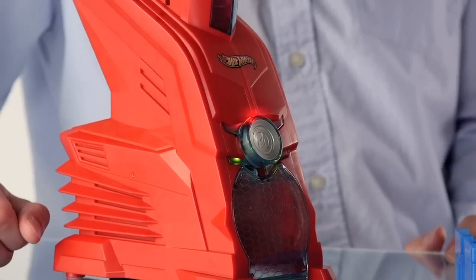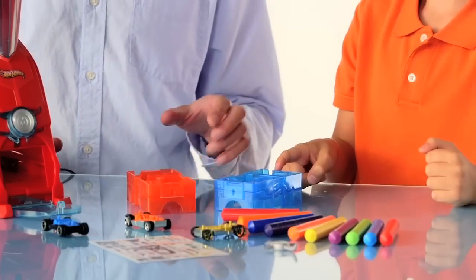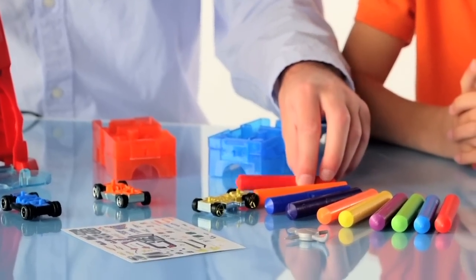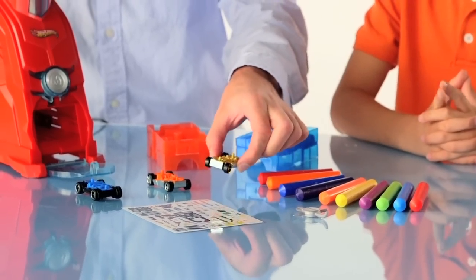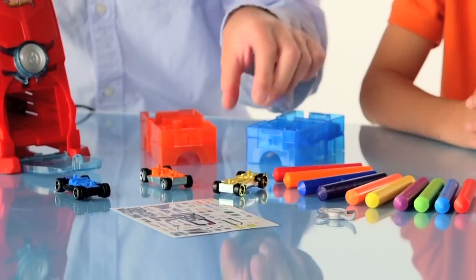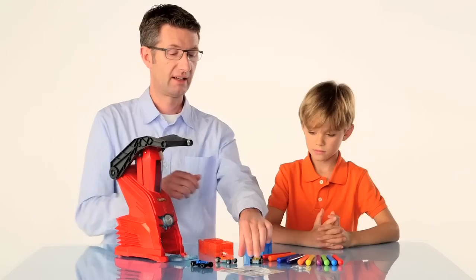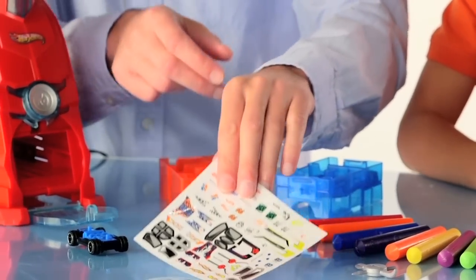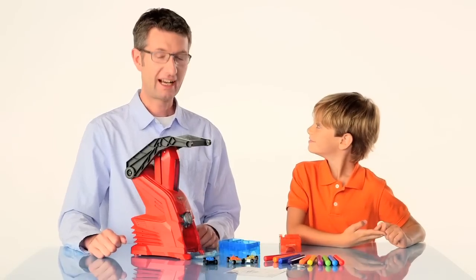Hot Wheels car maker. What do these things do? Well, these are the molds that you're going to use to make your car. These are the Protoshop wax sticks. Each of them makes one car. This is the chassis, and this is the part that you're going to place your car on once you've made it. And over here, these are the labels, and these you're going to use to decorate your car with. Cool, let's do it. Okay, let's go.